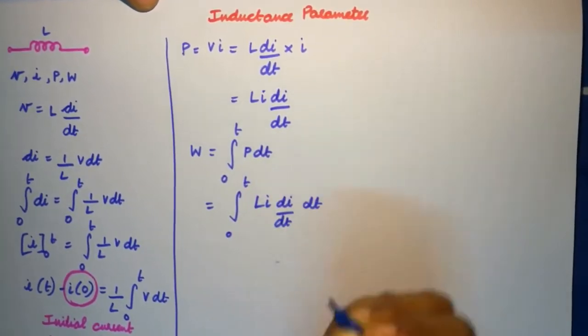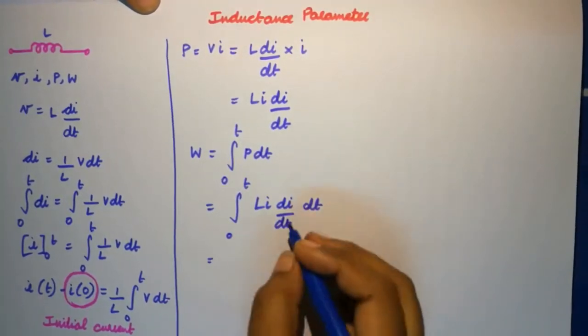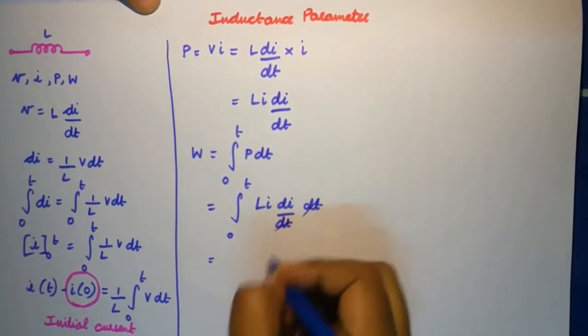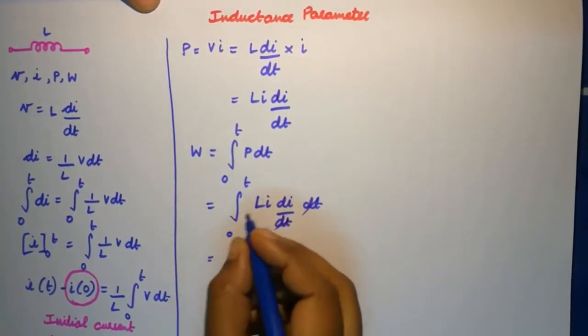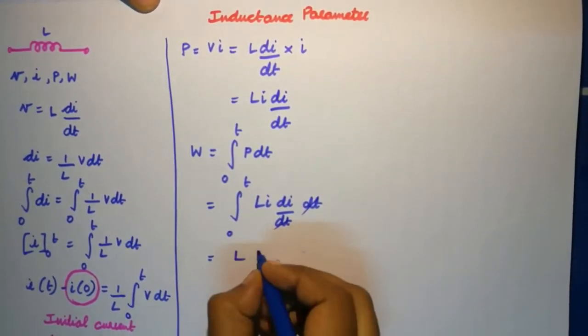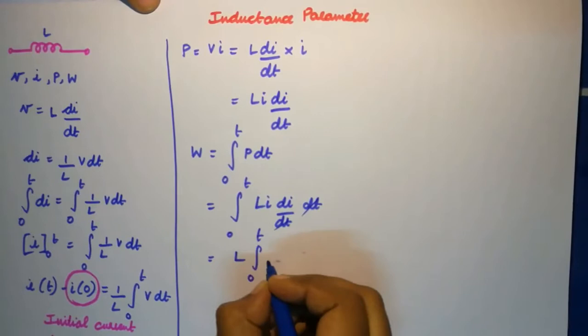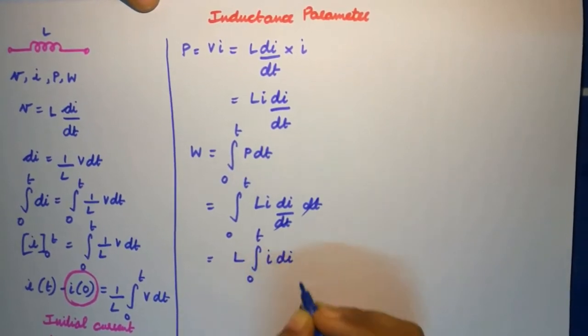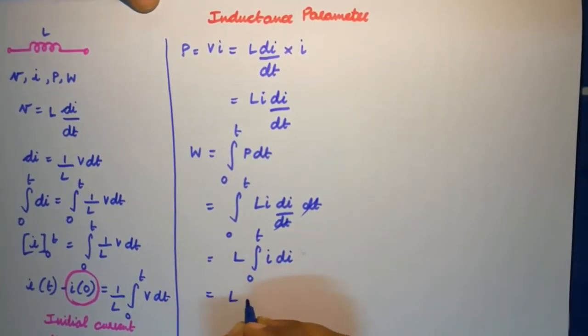With respect to dt, integration is with respect to dt, so I would get dt and dt would be cancelled. And I will have to integrate my i with respect to di. L is a constant I'm taking it outside, so I'll have to integrate i with respect to di and so I would get L into i square by 2.